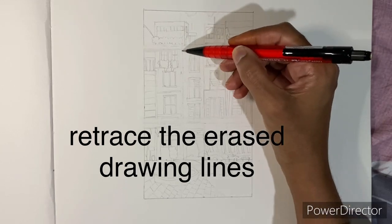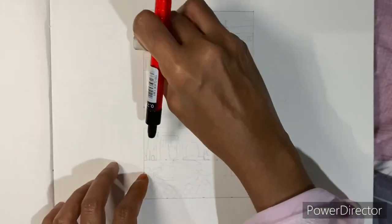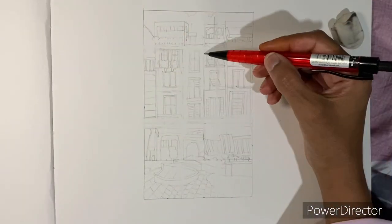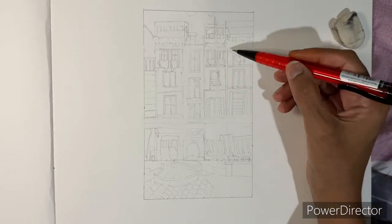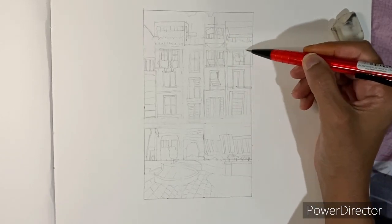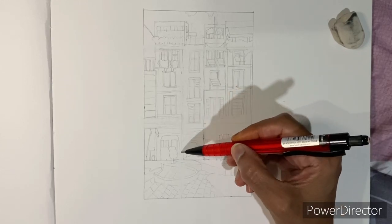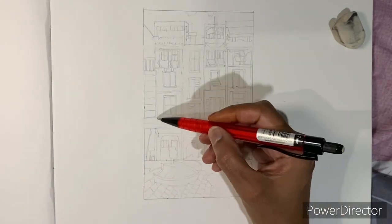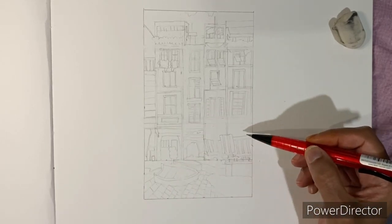Retrace back all the drawing lines because they will be lost when you erase the grid lines. And leave it as it is. Make sure the drawing lines are darker and do not add any value to your drawing. Just leave it as lines because we are going to use it for another project.